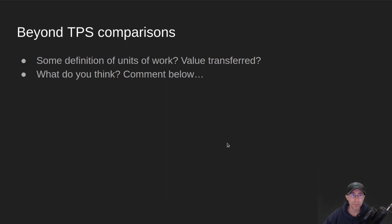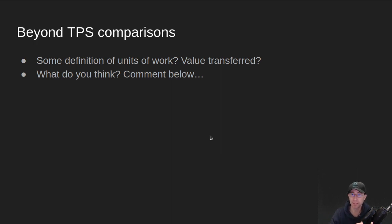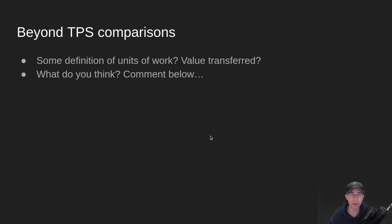So let's talk about beyond TPS comparisons. What are some things we can do to maybe compare these blockchains and transactions better? Maybe some type of definition of units of work — like how much work got done, or maybe how much value got transferred? That's a little tricky because you could have a transaction with a huge value. I don't know the answer to this one, but I just wanted to keep the conversation going from Twitter on to here. What do you think? What are some good ways to compare blockchains and transactions? Comment down below. And with that, nerd out.